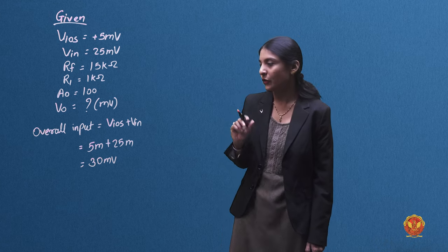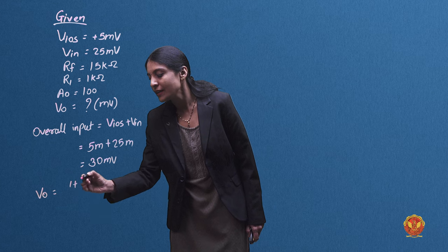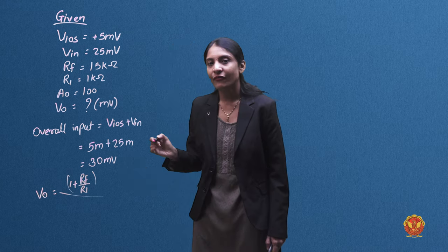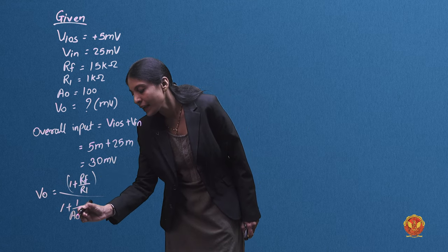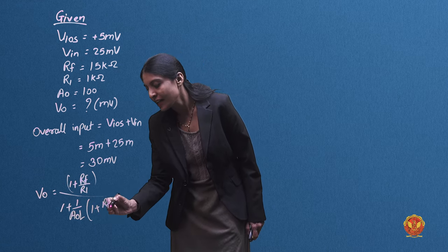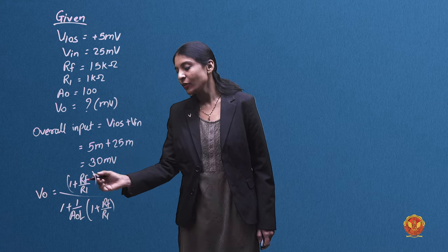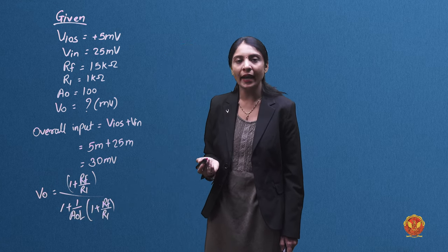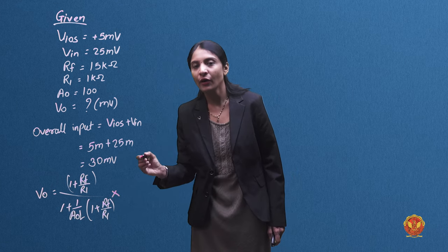Now we find the output voltage using the formula: Vout equals [1 + Rf/R1] divided by [1 + (1/Aol) × (1 + Rf/R1)], multiplied by the overall input voltage.